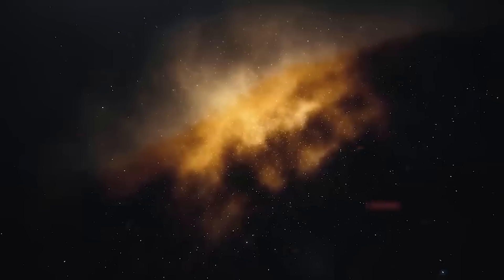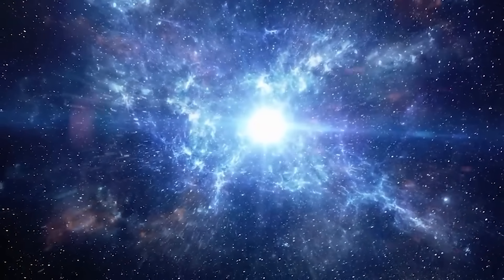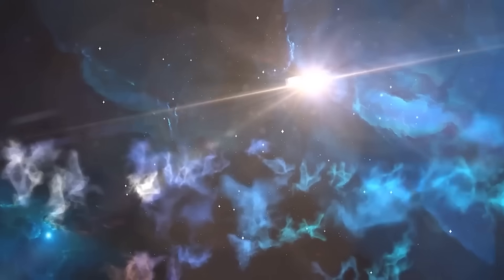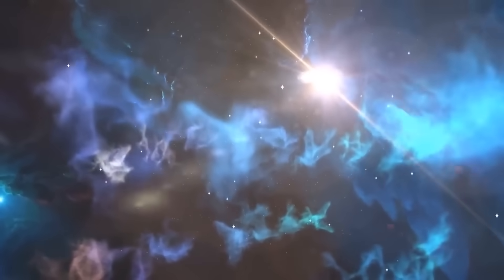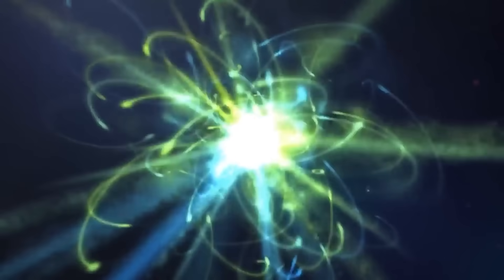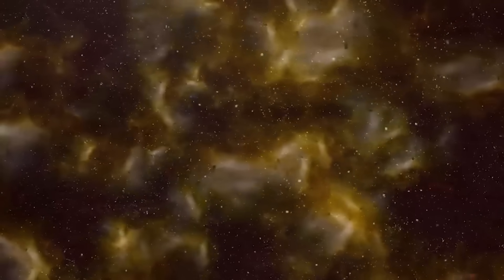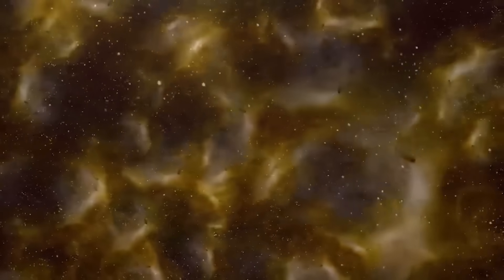Several hundred million years after the Big Bang, the process of re-ionization commenced with the formation of the first stars and galaxies. These young, hot stars emitted intense ultraviolet radiation, which ionized the surrounding neutral hydrogen atoms.